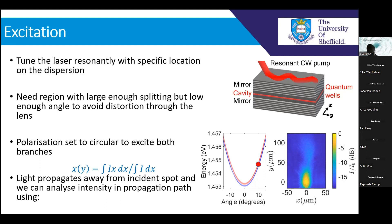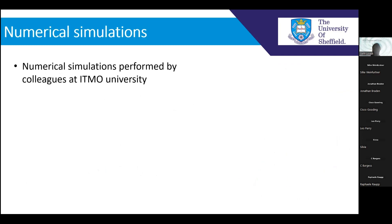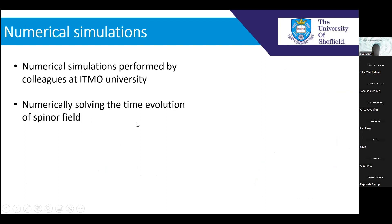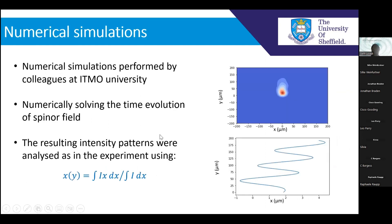We wanted to compare our measurements to theory, so our colleagues at ITMO University numerically solved the time evolution of the spinor field and created a simulation of what we saw in real space. They use the same centre-of-intensity equation. What they saw was this oscillatory behaviour of the centre of intensity as it propagated in Y. We gave them the parameters of our sample — the TE-TM splitting, the birefringence, and our specific pumping scheme — and they produced numerical simulations that we can directly compare to our experimental results.